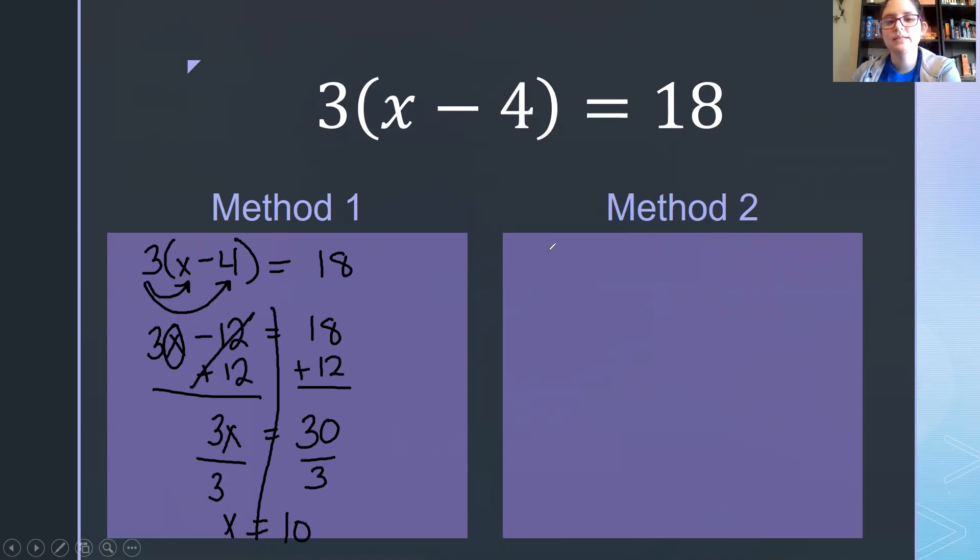Now the second method has us looking at the distributive property and thinking about what we can undo. Distributive property is just sharing a number with everything inside the parentheses with multiplication. We know we can undo multiplication with division, so I'm just going to go ahead and divide by 3. Times 3 divide by 3 cancel, so we're left with x minus 4 equals 18 divided by 3 is 6.